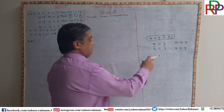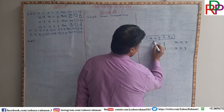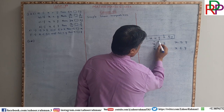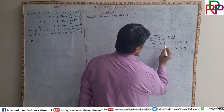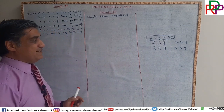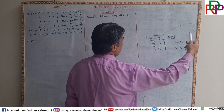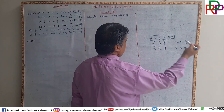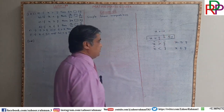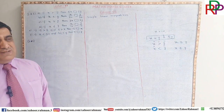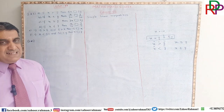For example, if I say that x is greater than 10, it means that x can have the values 11, 12, 13, 14, 15, and so on. But if we say x is equal to 10, then only one value — which is 10 — is possible.